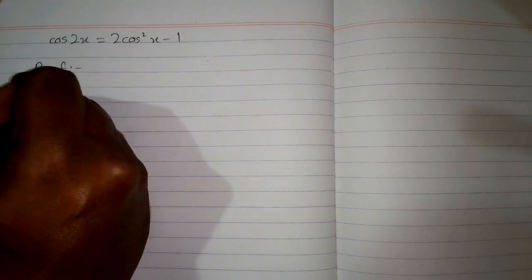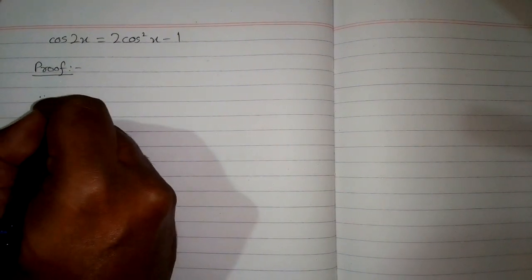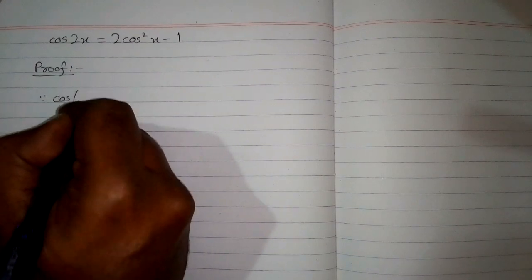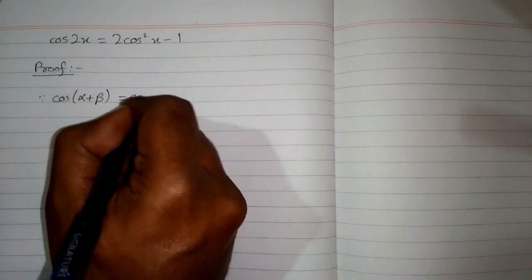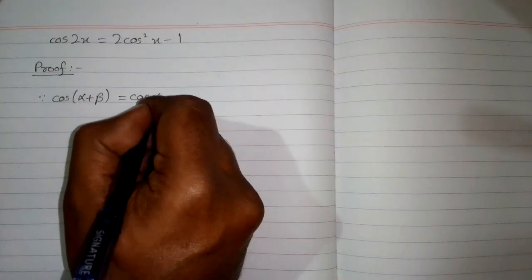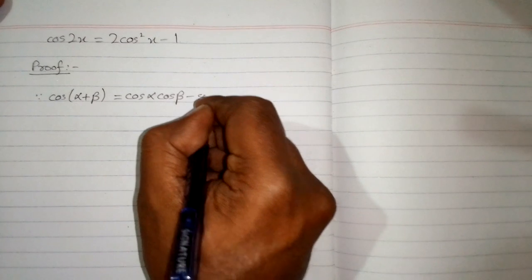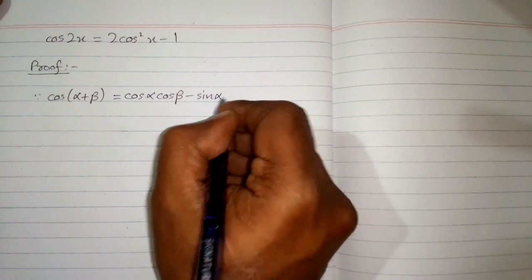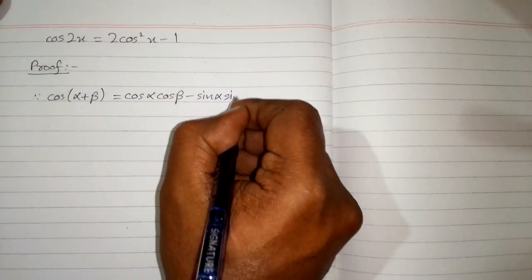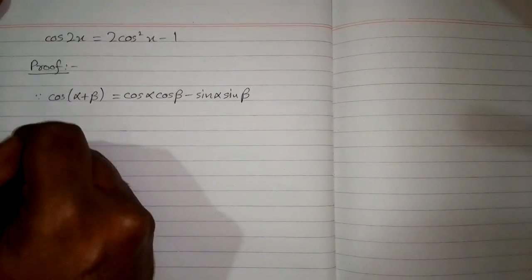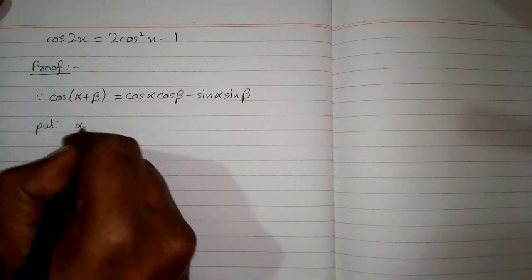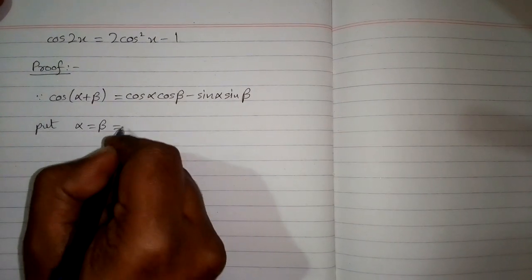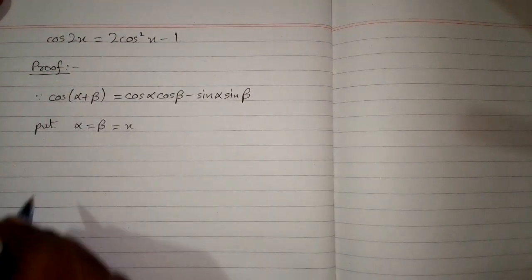We will use the trigonometric identity cos(α + β) = cos α cos β minus sin α sin β. We can put x in place of α and β.